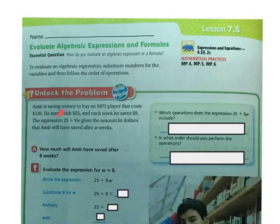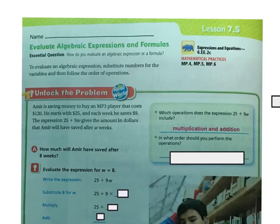Let's unlock the problem. Amir is saving money to buy an MP3 player that costs $120. He starts with $25 and each week he saves $9. The expression 25 plus 9w gives the amount that Amir will have saved after weeks, so the w stands for weeks. He started with 25, plus, and then I'm saving $9 per week, so 9 times w tells me how much he's going to save.